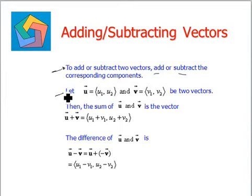Let u be a vector given by u1 comma u2 and v be the vector given by v1 comma v2. We have to add these vectors, then the sum of vector u plus vector v is given by u1 plus v1 and u2 plus v2. So we have added the corresponding components, that is u1 is added to v1 while u2 is added to v2 to get the resultant vector.